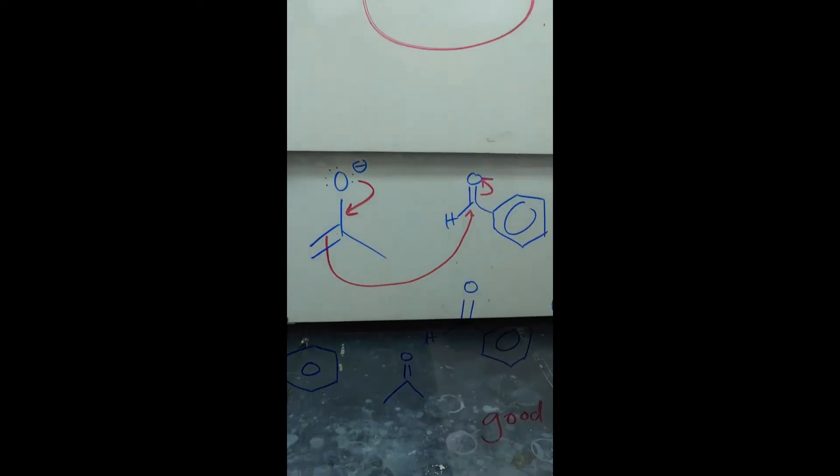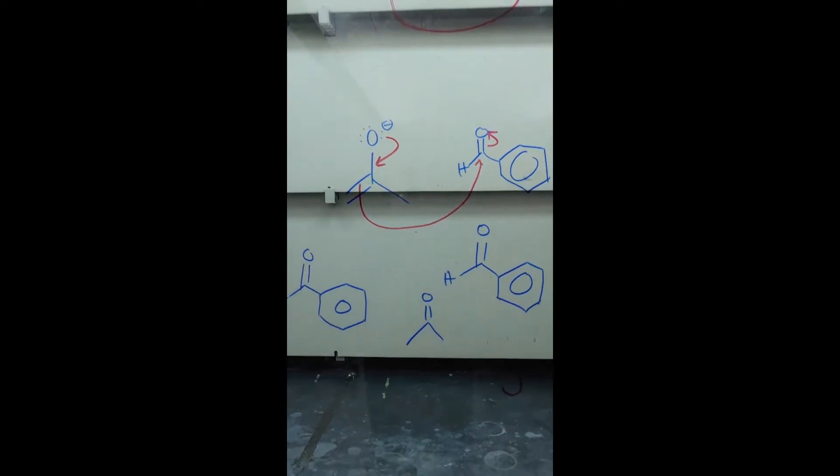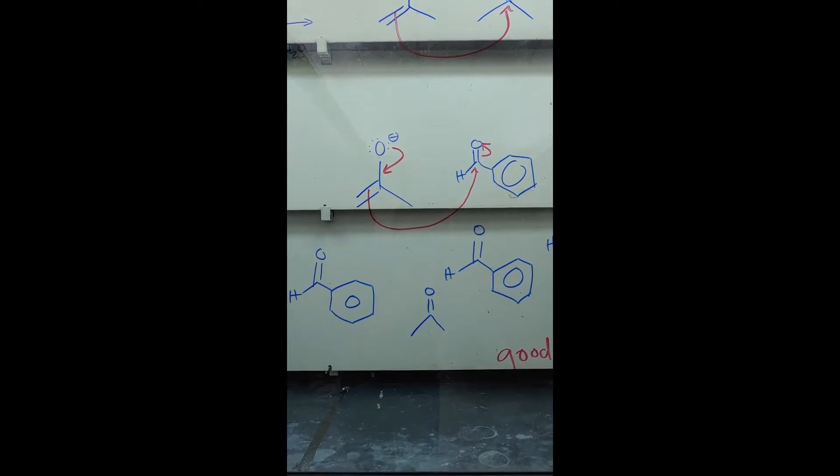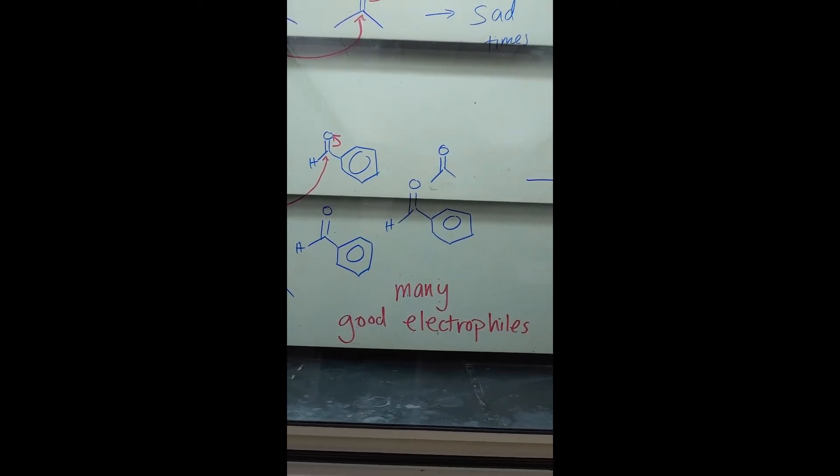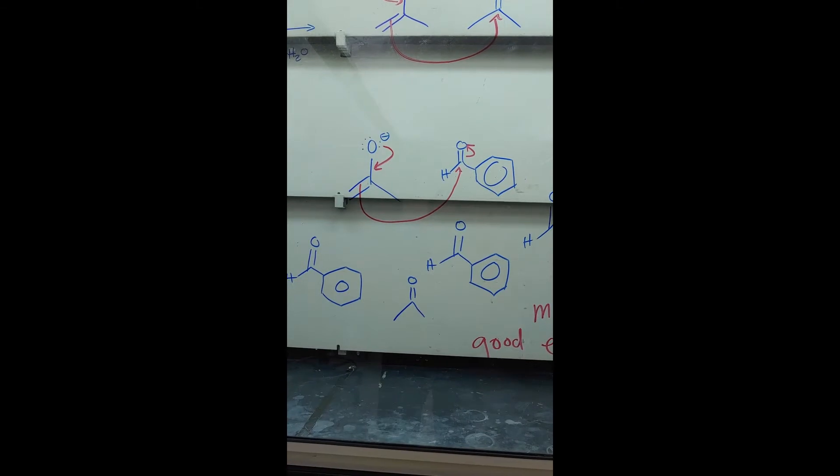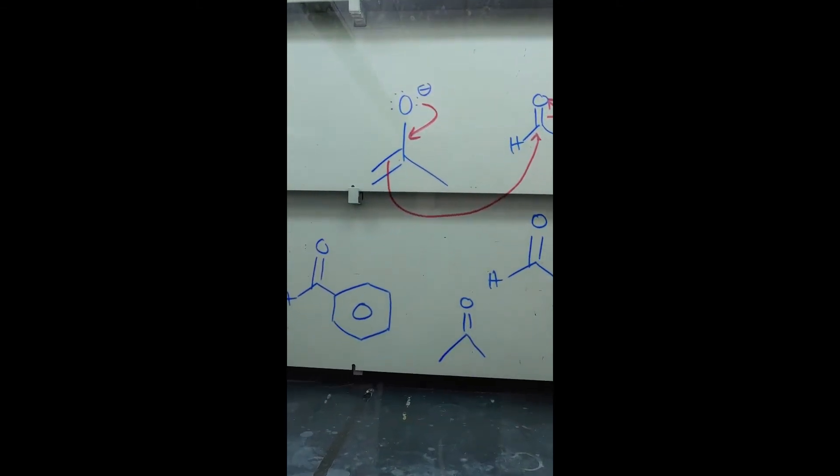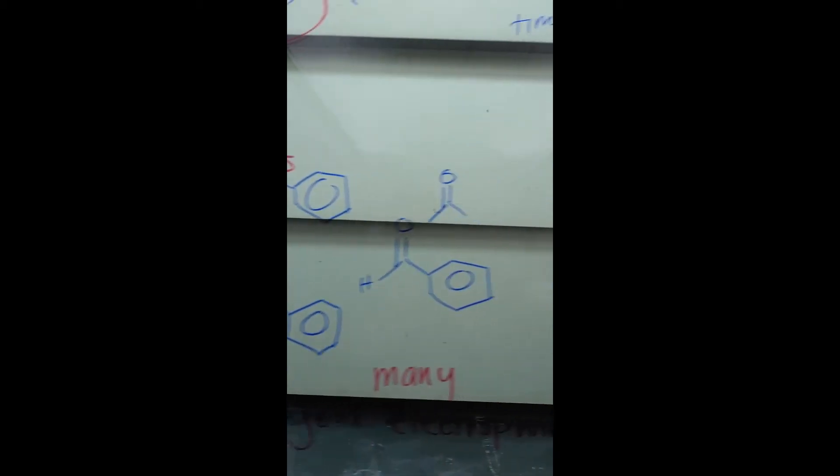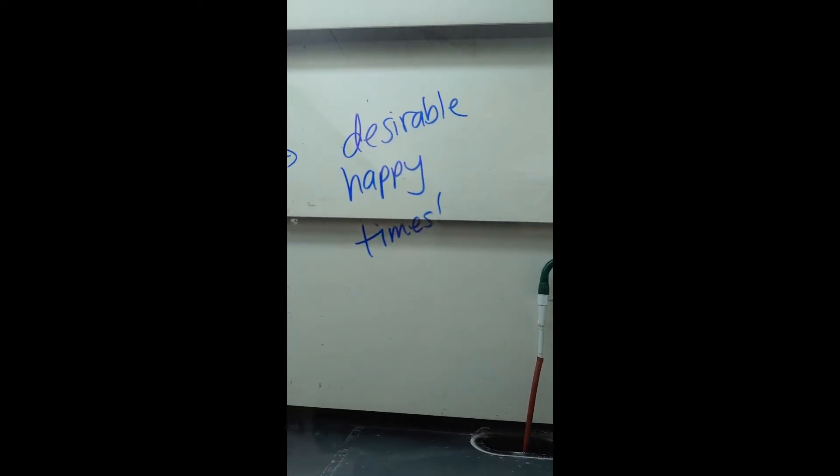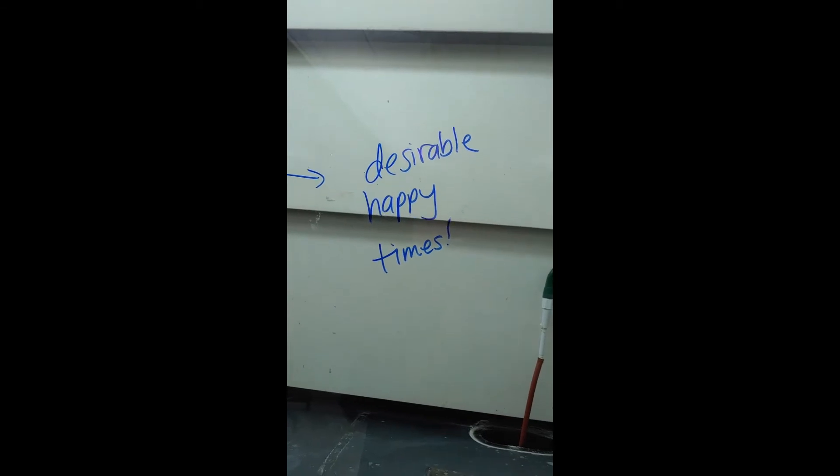However, if we have excess benzaldehyde and a lot of that around, notice that we have many good electrophiles here, those are going to selectively be attacked by our nucleophilic enolate ion. And that will result in desirable happy times. And we're going to get our product.